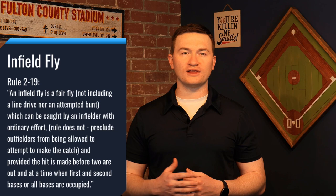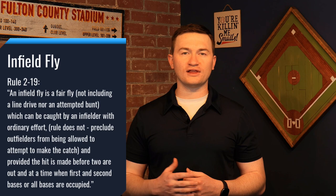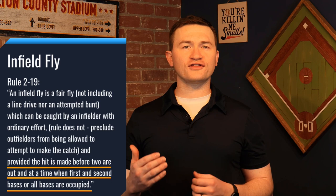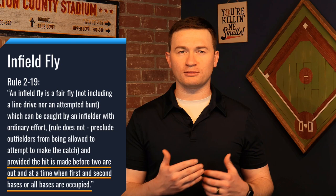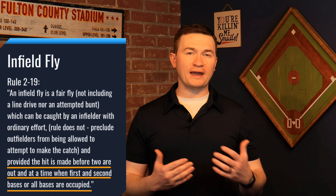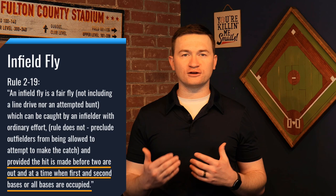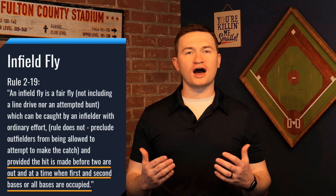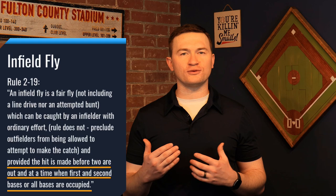The third requirement is that the infield fly occur with less than two outs and with runners on first and second, or first, second, and third. The infield fly rule is designed to prevent a team from turning a cheap double play. With bases loaded or first and second, runners are expected to stay at their base for a potential tag up. If the defense let the ball drop, they'd have plenty of time to throw to multiple bases for a double or triple play — that's why this rule is so important.